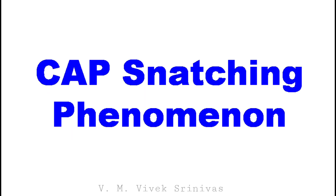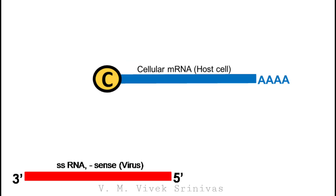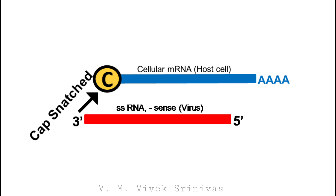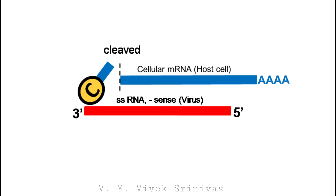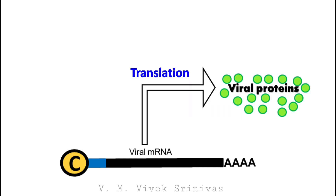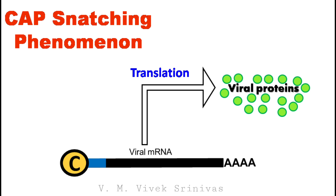Cap-snatching phenomenon: The primary transcription involves an unusual phenomenon known as cap-snatching. Here the virus snatches the 5' methyl cap from the cellular mRNA by cleaving the 5' cap from the host mRNA by endonuclease activity. This snatched or cleaved 5' cap is used by the virus as a primer for transcription of viral mRNA, that is mRNA synthesis. This synthesized mRNA will in turn translate for the viral proteins. This type of unusual transcription seen in orthomyxoviruses is called the cap-snatching phenomenon.